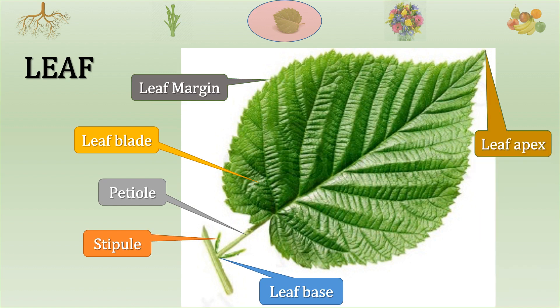Next is leaf apex. The tip of the leaf is called leaf apex. Next is midvein. Midvein is the main or central vein of the leaf. As it is in the center, it is called the midvein.